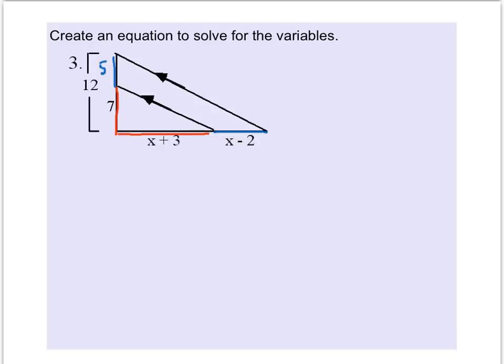And then let's cross-multiply to solve. 5 times the quantity x plus 3 is equal to 7 times the quantity x minus 2. Let's use the distributive property.